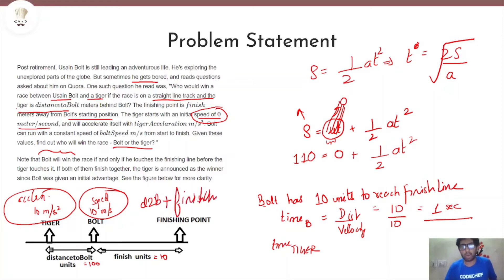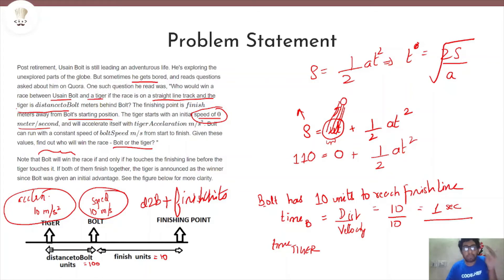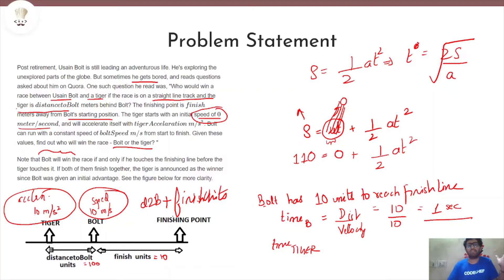Why is the Tiger's distance distance_to_Bolt plus finish_units? Because Bolt is given a head start, so the Tiger is way behind Bolt. For the Tiger to reach the finishing point, we add distance_to_Bolt and finish_units together. In this first sample case that gives 100 + 10 = 110 units, so the Tiger is 110 units away from the finishing point.